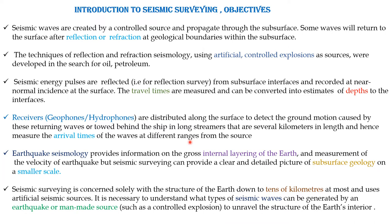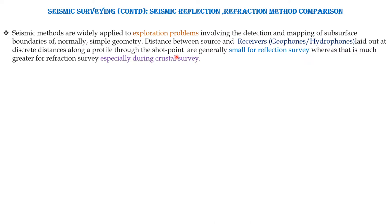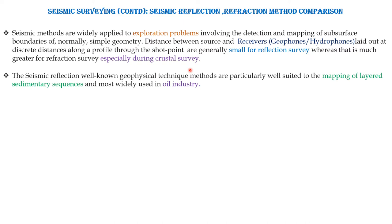Before proceeding to seismic survey we need to understand what types of seismic waves can be generated by an earthquake or man-made source to unravel the structure of the earth's interior. There are two types of surveying: reflection and the refraction method. These methods are widely applied to exploration problems and mapping of the subsurface. Receivers are laid out at a distance along the profile through the shot point, and the shot-to-receiver distance is small for reflection survey, whereas for refraction survey it is very large — 10 to 100 kilometers during crustal survey.